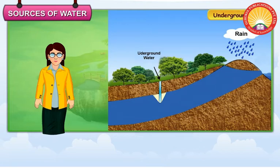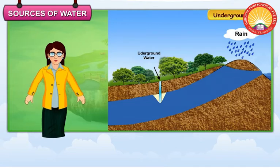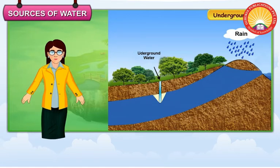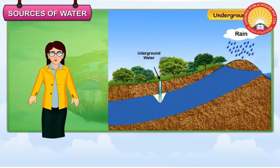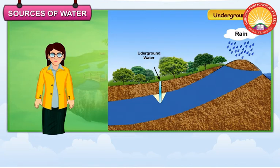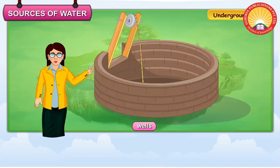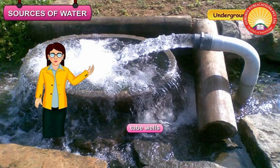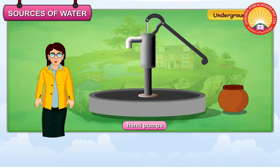Underground water: When rainwater percolates into the soil and reaches under the surface of the earth, it is called underground water. It can be made available through wells, tube wells, hand pumps, etc.